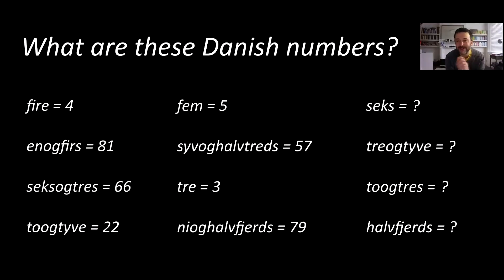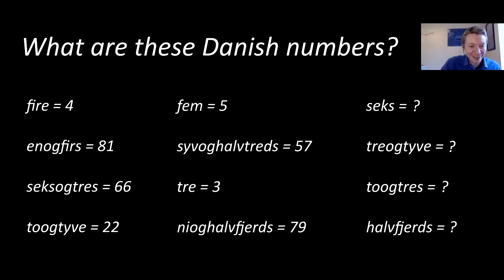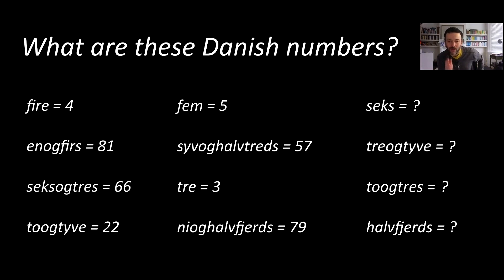So what have you brought along to show us today? I've brought a number puzzle in Danish. You can see these are Danish numbers. On the left there is a column where we have the words for a few numbers in Danish and the actual digits that describe those numbers. So 4 is 4, then 66 is 66, et cetera — you've got that list there. And the question is, on the right list, you need to work out what those numbers are.